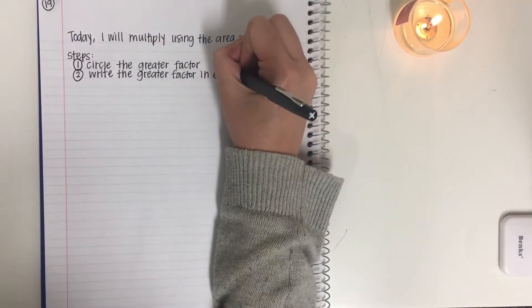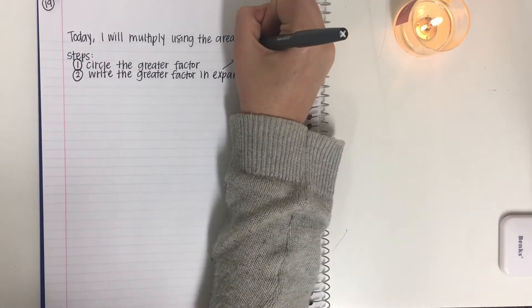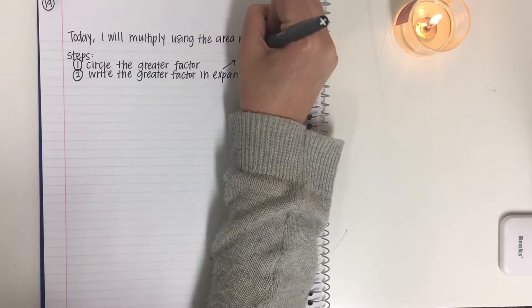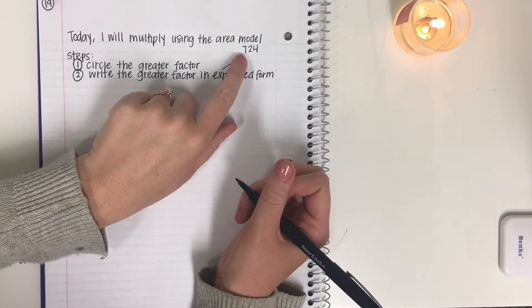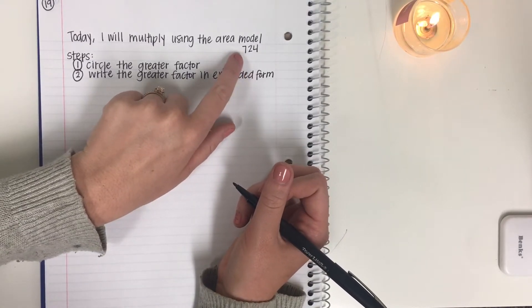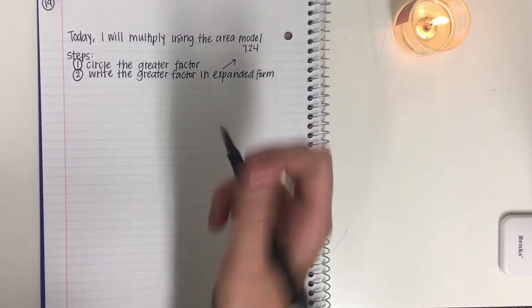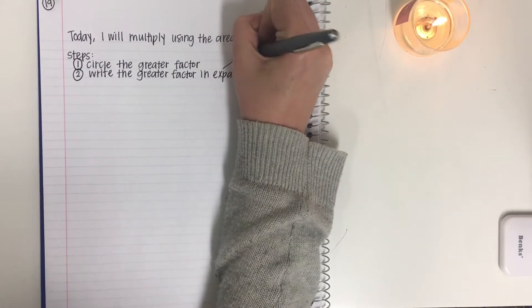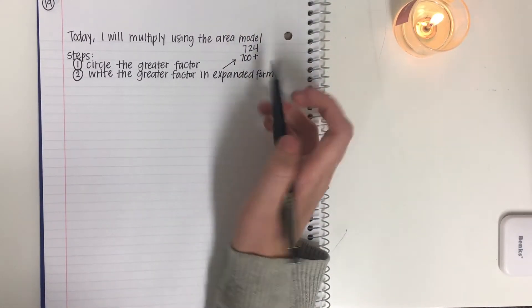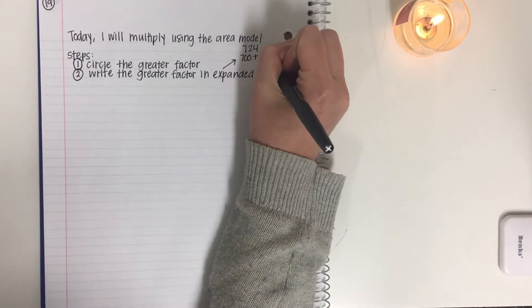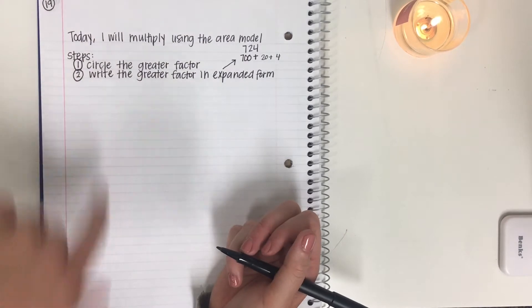Now let's look and review for a second. Expanded form is a way that you can write a number. Let's say that we're writing 724. To expand it, you look at each place value, and you see how much that place value is actually worth. So we have, let's start with the greatest place value, 7. 7 is in the hundreds place, so we would write 700 plus, move over to the right, we have 2 in the tens place, so that would be 20 plus 4. That is writing a number in expanded form, and that's what you're going to do for step two.